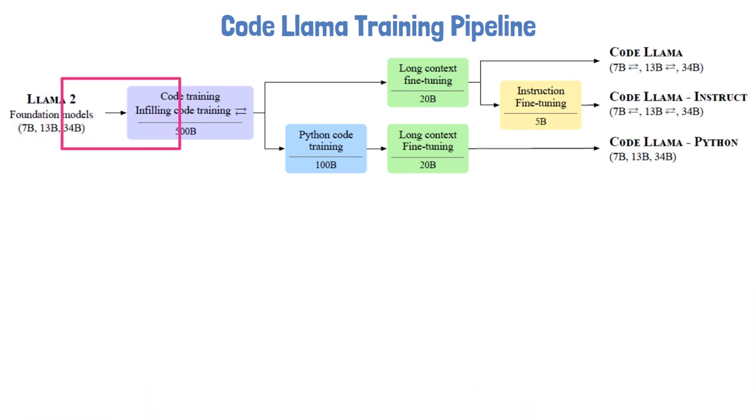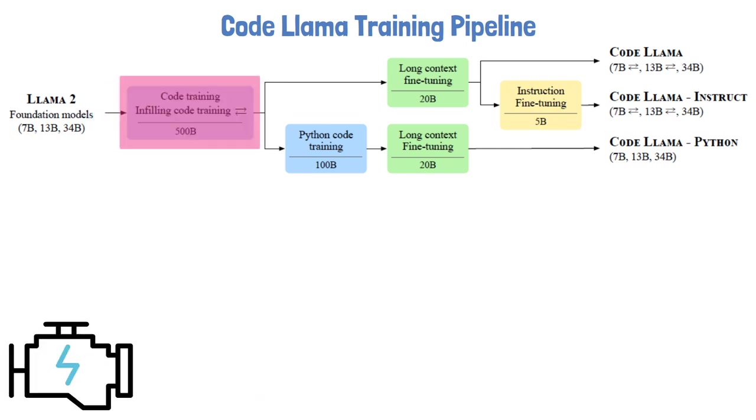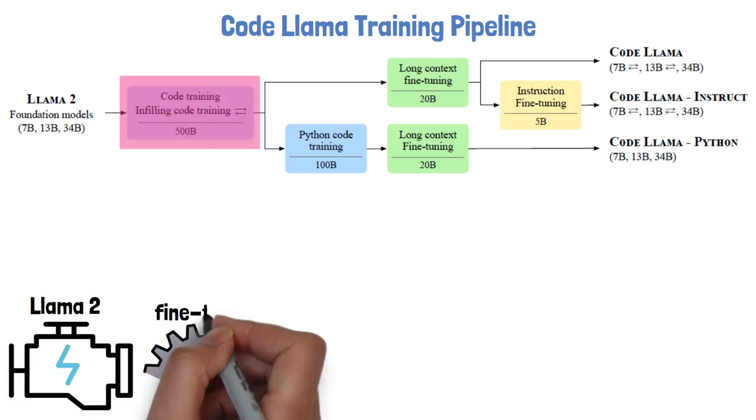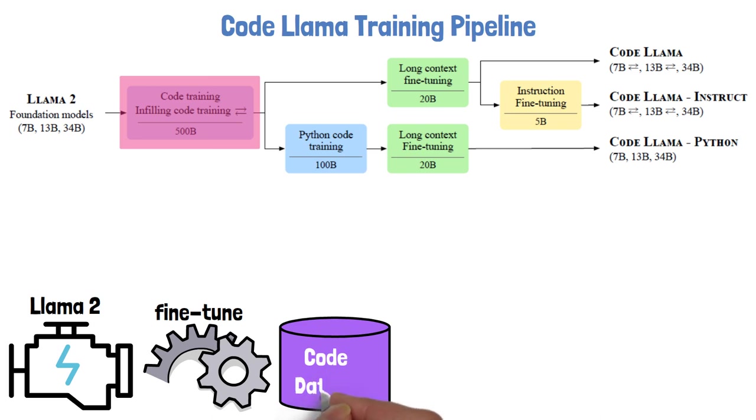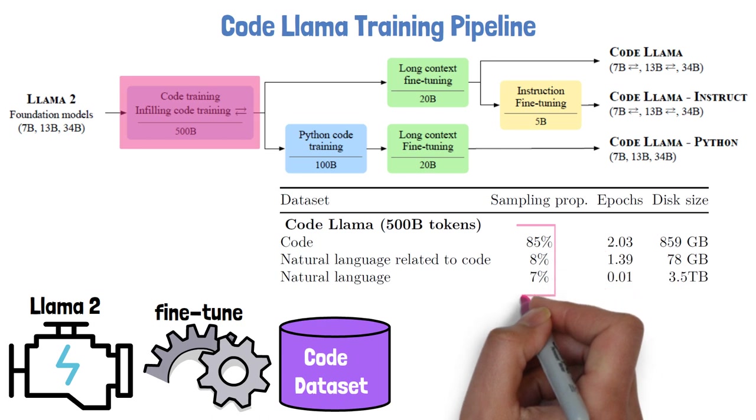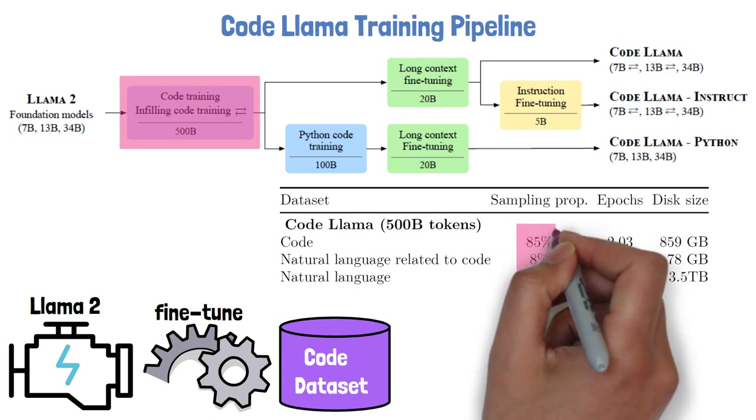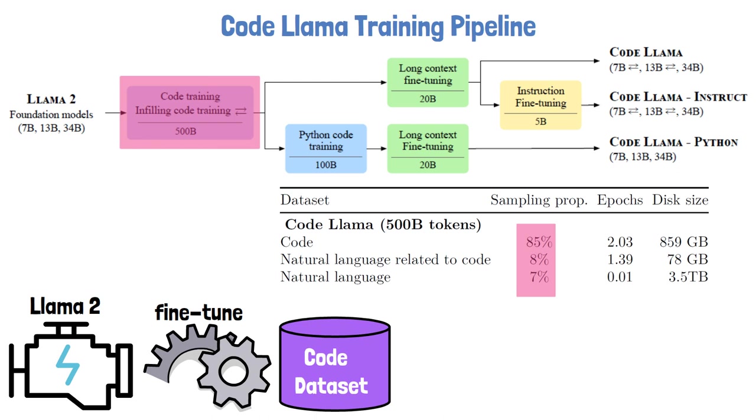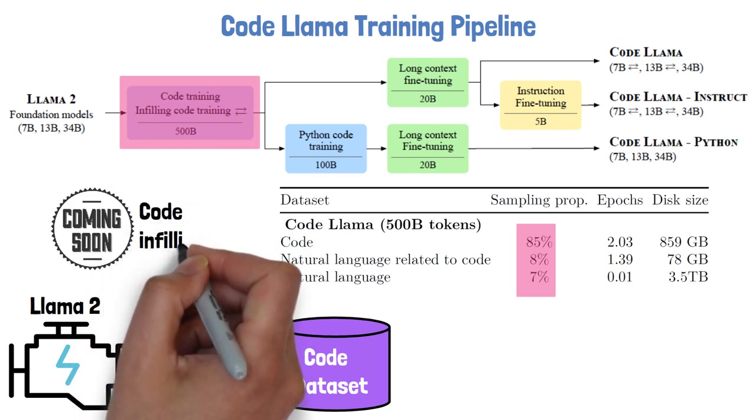The next step is code training and in-filling code training, where the Llama 2 model is fine-tuned on a code dataset of 500 billion tokens. In this table from the paper we can see that the dataset is comprised of 85% code, another 8% of natural language related to code, and the last 7% are natural language to help the model keep its natural language understanding skills. We'll expand more about what is in-filling code training a bit later in this video.